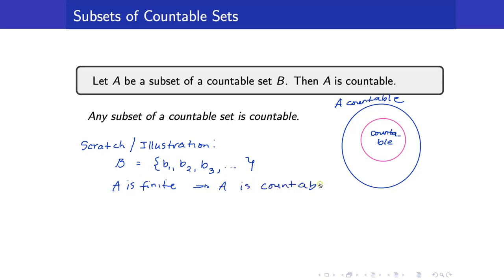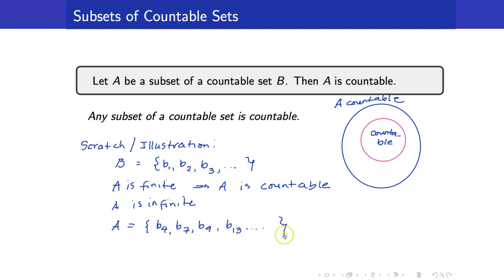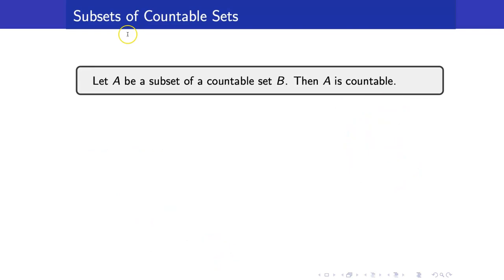Since B is countable, we can write it as B_1, B_2, B_3, and so on. If A is finite, we are done — A is already countable. So assume A is infinite; we need to show A is countably infinite. Suppose A contains elements B_4, B_7, B_9, B_13, and so on. We take A_1 to be the element in B whose subscript is the smallest such that it belongs in A, then A_2, A_3, and so on. This is just to give intuition for how the proof will look.